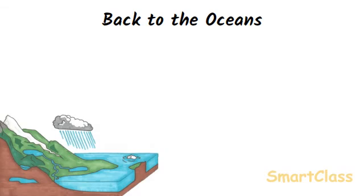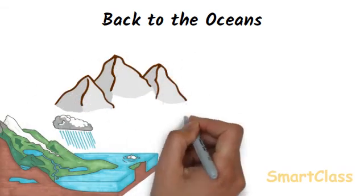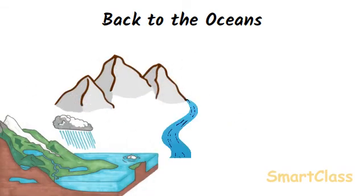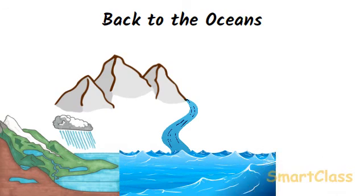The snow which falls on high mountains melts slowly and flows down the mountains as streams and rivers. Some of the rain water which falls on the land also goes into the river. Most of the rivers, after traveling long distances, finally fall into sea or ocean. This is how most of the water from rain and snow falls into the ocean.